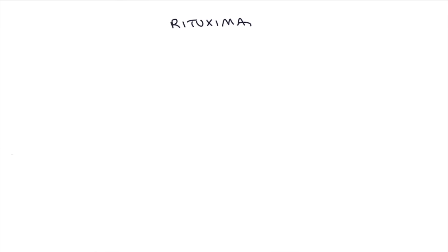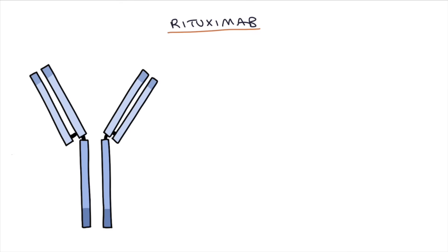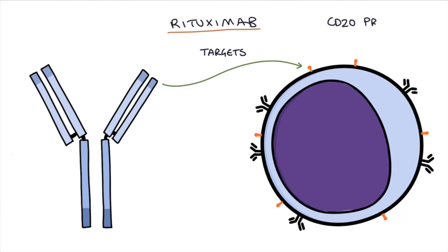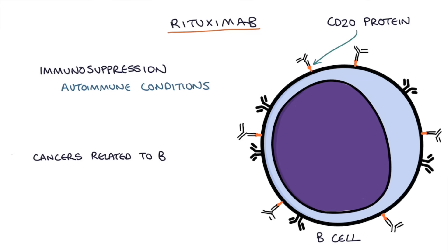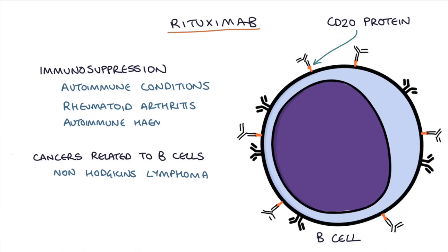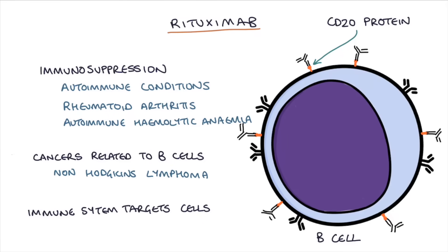Let's go through some examples of monoclonal antibodies. Firstly, rituximab — this is a monoclonal antibody that targets the CD20 protein on the surface of B cells. It's used for immunosuppression for autoimmune conditions and cancers related to B cells, such as non-Hodgkin's lymphoma, rheumatoid arthritis, and autoimmune hemolytic anemia. It causes the immune system to target those B cells associated with the CD20 protein and reduces the function of those cells.